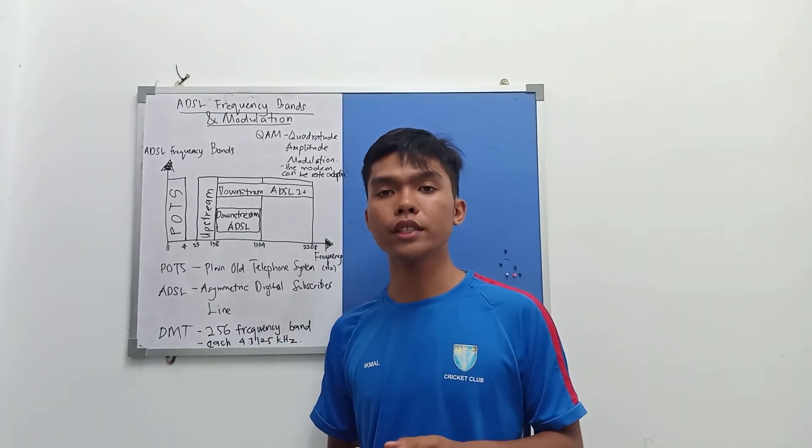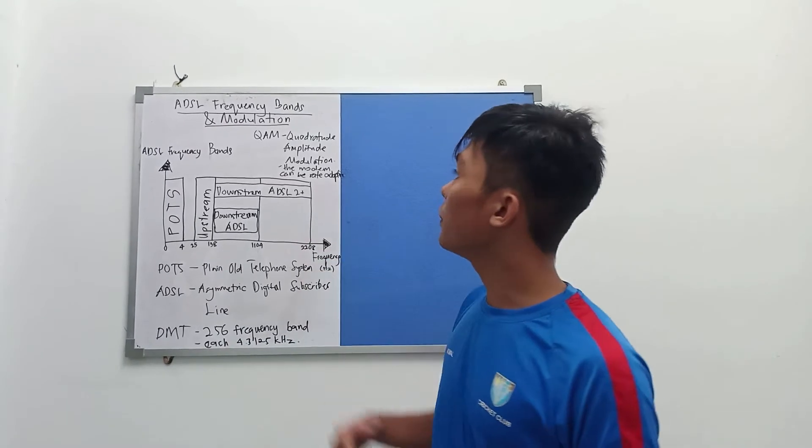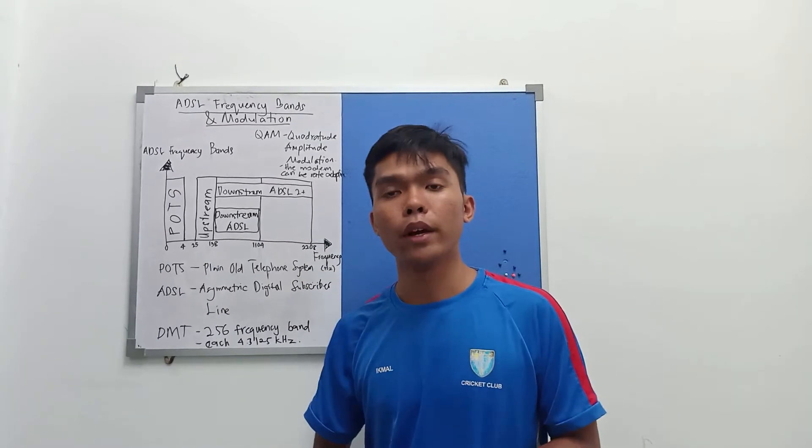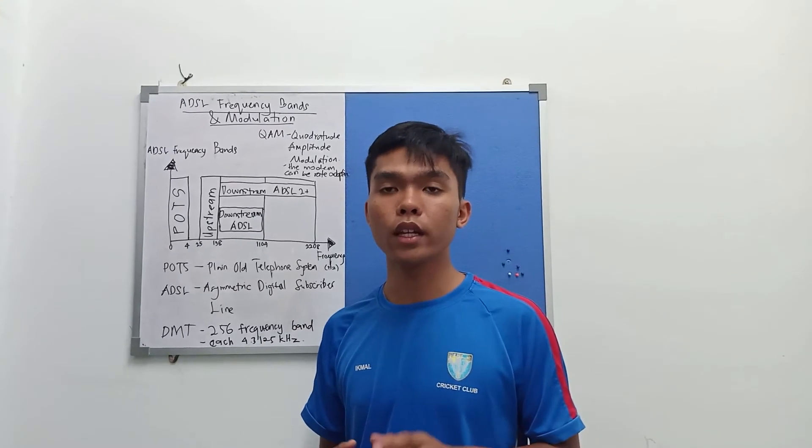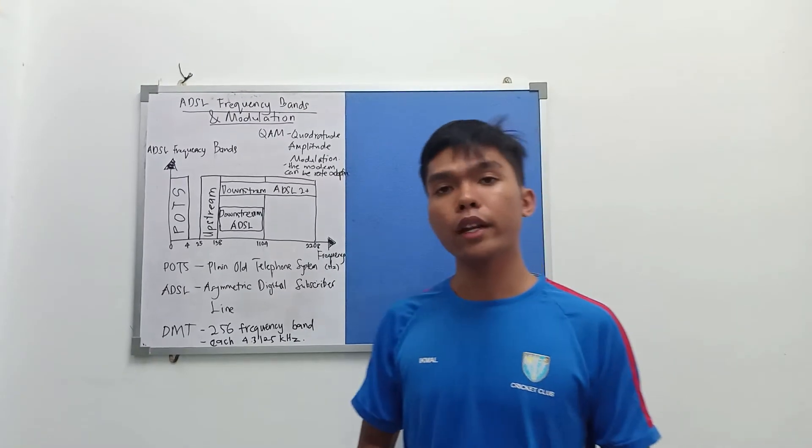Within each channel, modulation uses quadrature amplitude modulation. By varying the number of bits per symbol within a channel, the modem can be very adaptive.